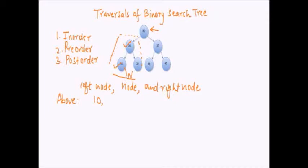Since the left subtree of 20 has been printed, we print 20. Now we move to the right side of node 20, where we encounter node 22. Is there a left subtree of node 22? No. So we print node 22. Moving back up at node 20, we have printed the left subtree of 20, node 20 itself, and the right subtree of 20. So we move up to the parent, node 30, and since the left subtree of node 30 has been printed, we print 30 and move to the right subtree of 30.